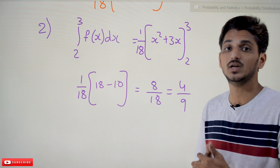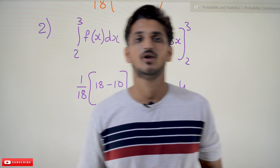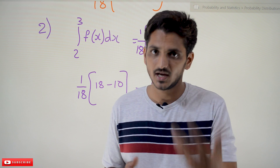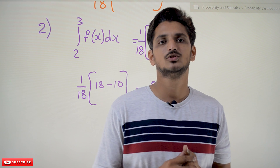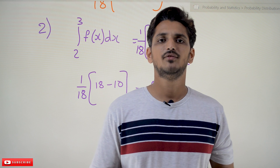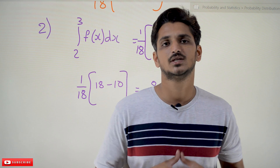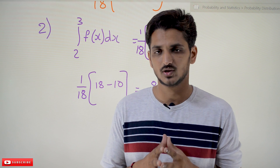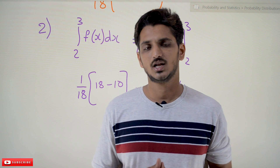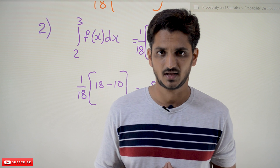This is how we identify probability values for continuous probability distribution functions. Hope you understand and got a good idea about probability density functions. If you have any questions, please post them in the comment section below. Thanks for watching — if you haven't subscribed to our channel, please subscribe and press the bell icon for the latest updates.